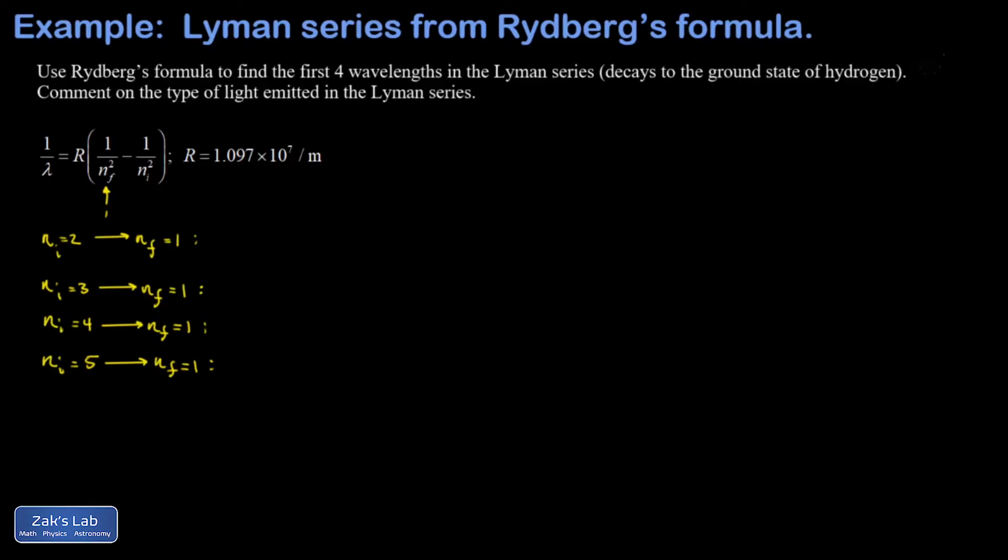So to get the first wavelength in the Lyman series, I have 1 over that wavelength lambda, and I'll plug in the Rydberg constant here, 1.097 times 10 to the 7 per meter, and then I have a 1 over 1 squared minus 1 over 2 squared.